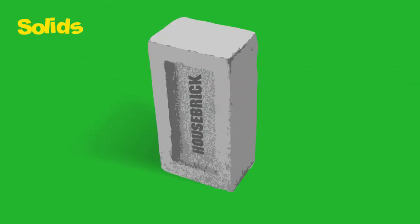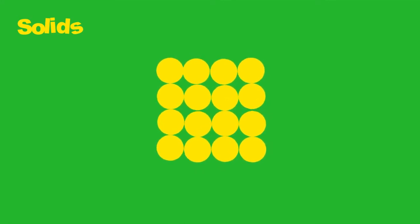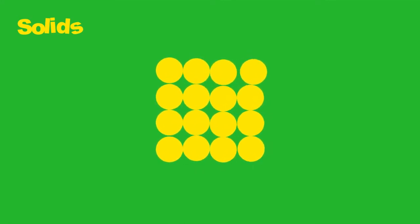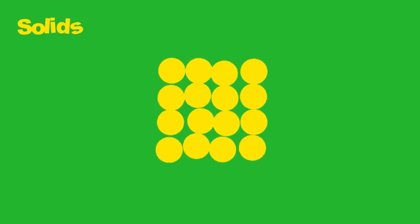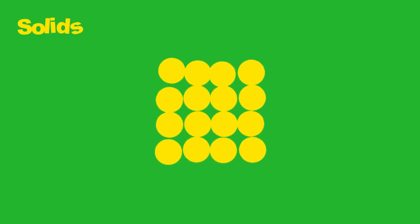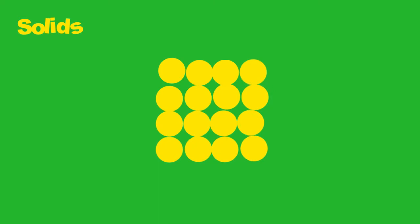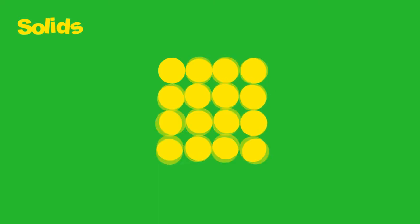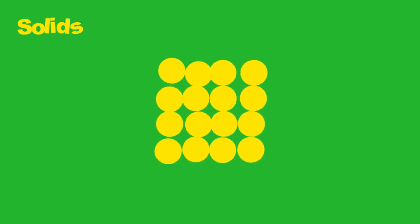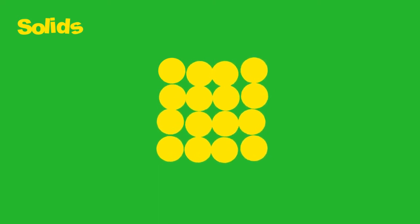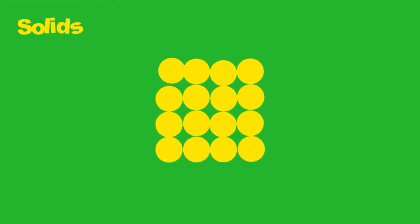Solids. In a solid, the particles are all packed tightly together and arranged in a regular pattern. Remember, the particles are constantly moving. So in a solid, because they are tightly packed, they can't move easily, so they vibrate. The forces between the particles that hold them together is strong and the particles do not move freely.